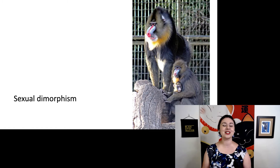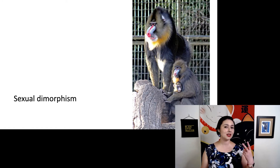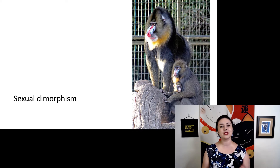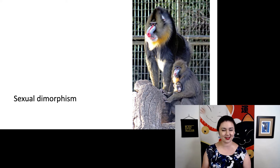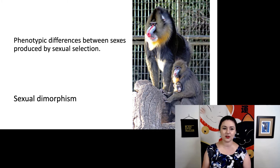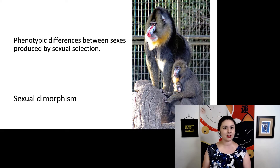Another important term is sexual dimorphism. Morph means form and di means two, so this means there are two different forms. The sexual modifier means it's according to the sexes — males are different than females. So this just means any phenotypic difference between the sexes produced by sexual selection.